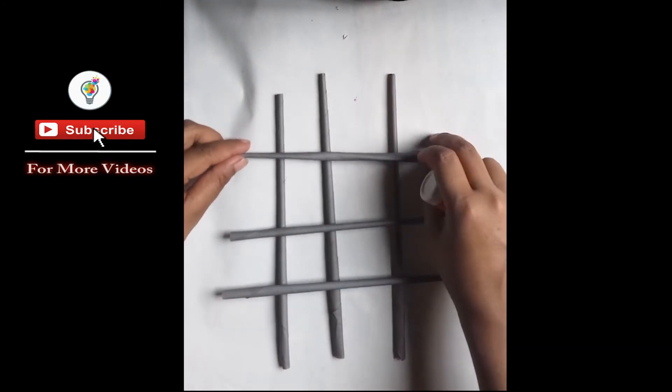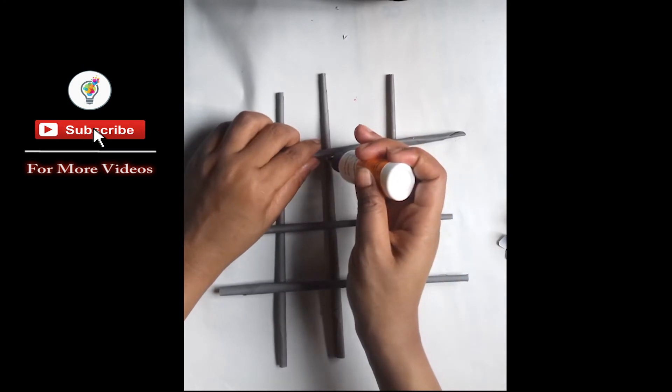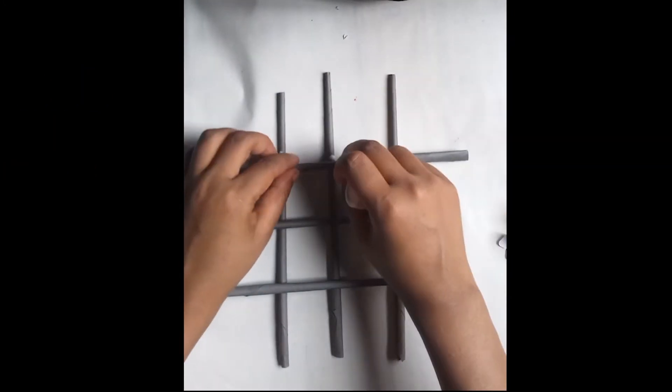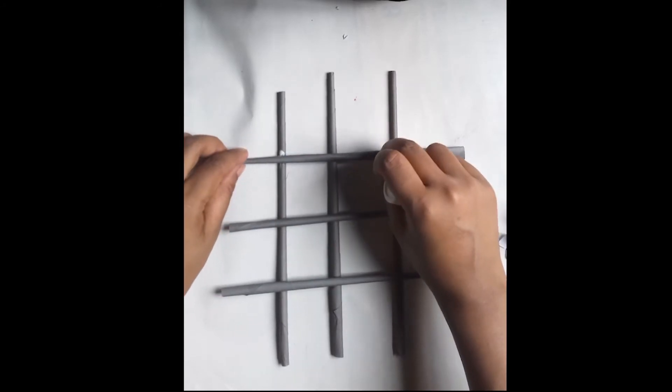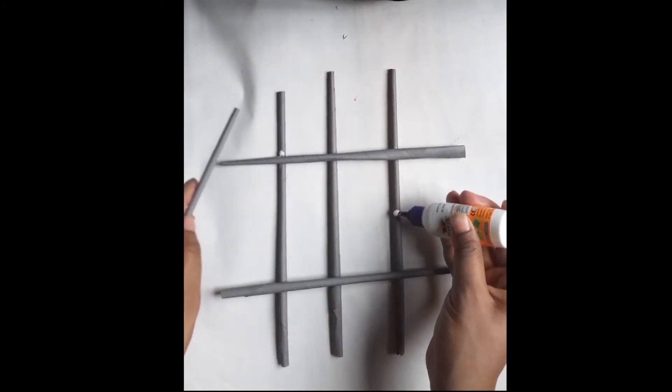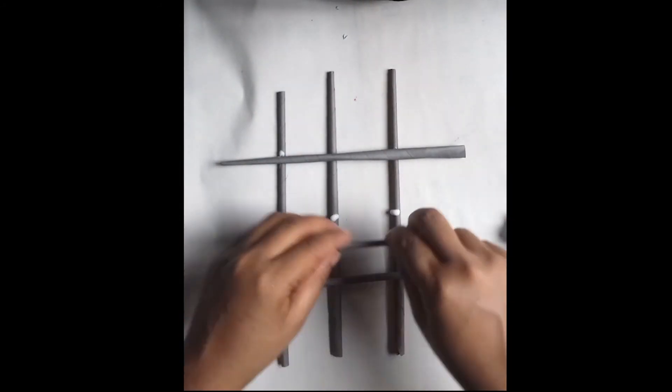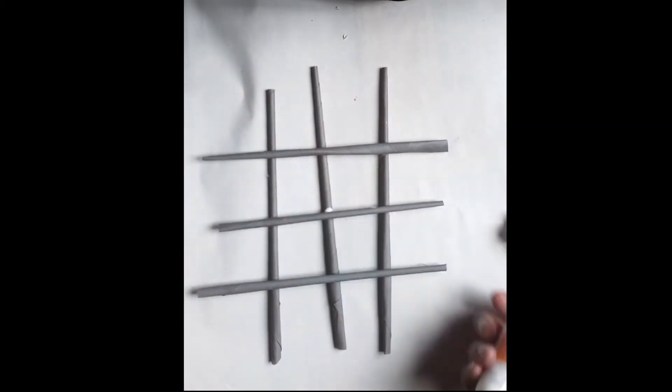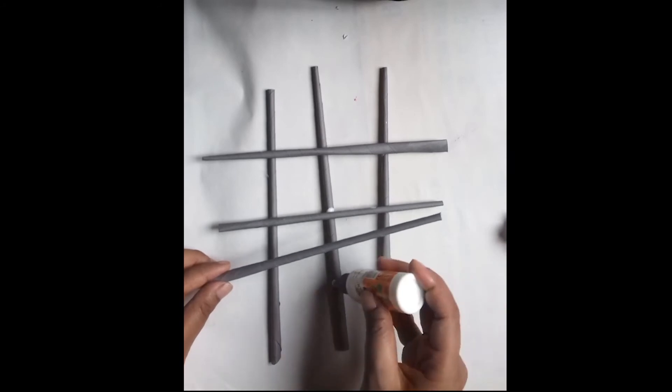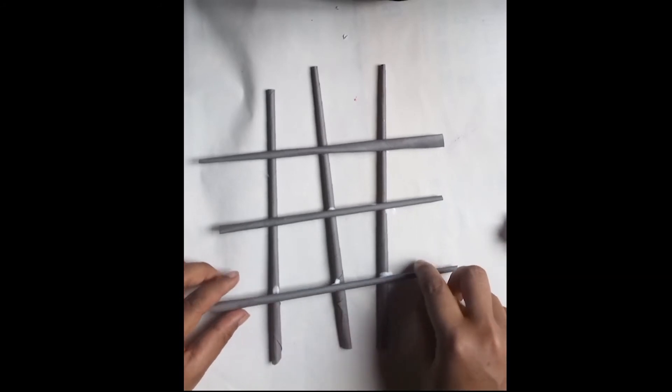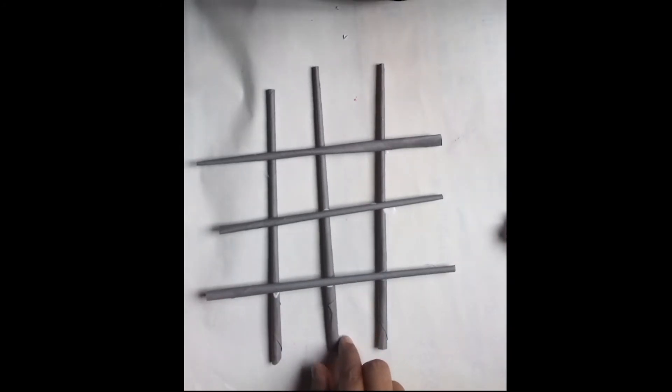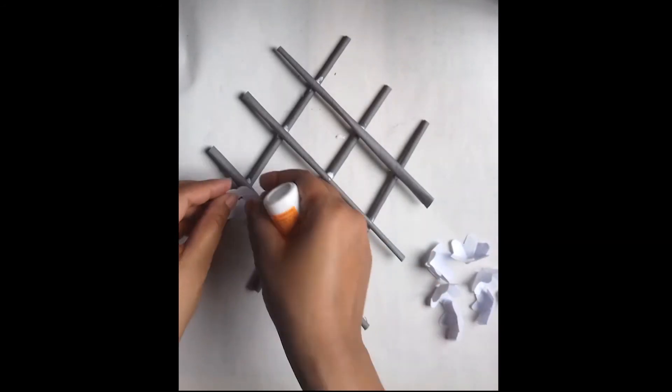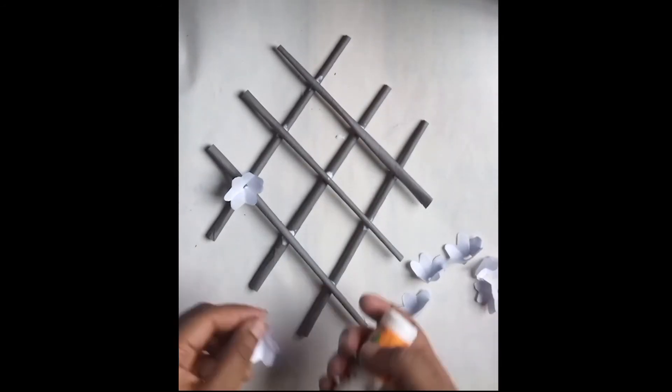Now glue every joint. Then glue behind the paper flower and attach it to each joint of the sticks.